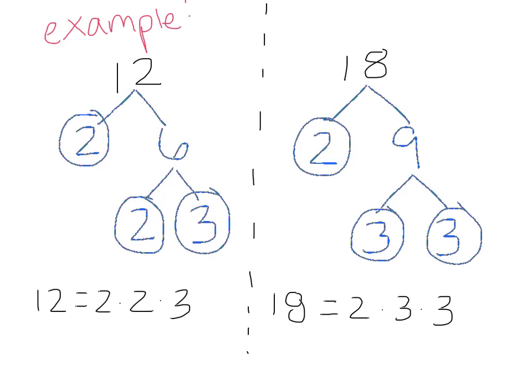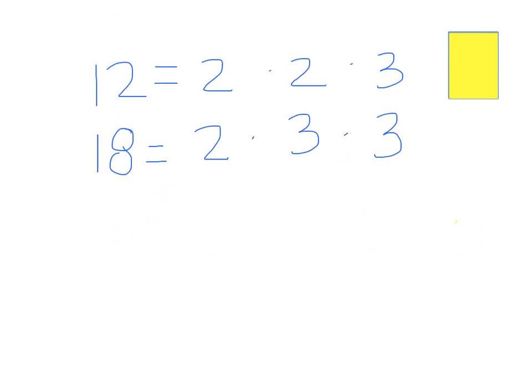Now that I have that, I'm going to go on to the next page and try to find the greatest common factor these two numbers have in common. Looking at 12 and 18, I can see that my prime factorizations next to each other kind of helps me see what they have in common.